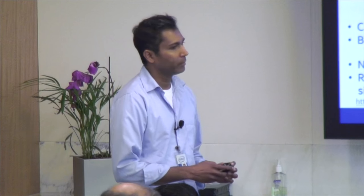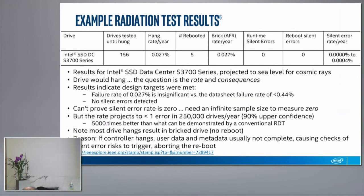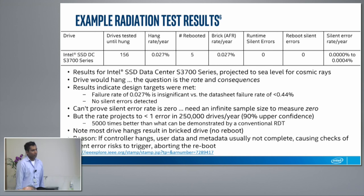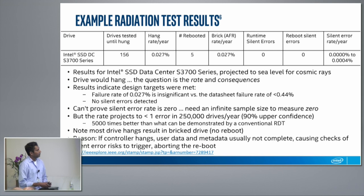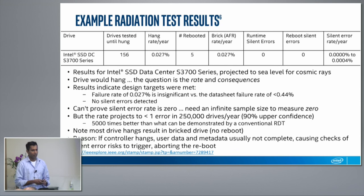When you're doing that kind of aggressive bricking, you want to make sure your annual failure rate doesn't suddenly increase beyond what you're specifying. Typically that number is about 0.44%. In this particular case the brick rate was significantly lower, so this kind of bricking policy doesn't really increase the annual failure rate significantly. For an enterprise customer this is a good solution — we're preventing silent data corruption and not increasing the brick rate to unacceptable levels.